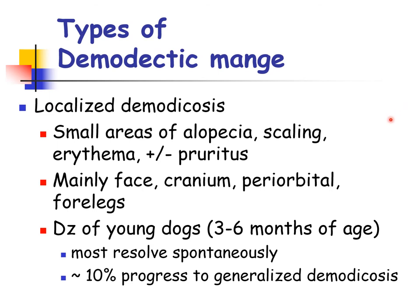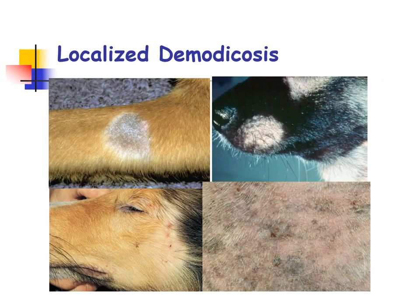The localized form of demodicosis is seen in dogs usually less than one year old, at three to six months of age. Most of these cases resolve spontaneously. The lesions often consist of one to five well-demarcated small areas of alopecia, erythema, and scaling. Pruritus may or may not be present. About 10% may proceed to the generalized form. Lesion locations include the face, cranium, periorbital region, and forelegs. These are the clinical presentations of localized demodicosis.